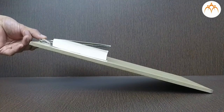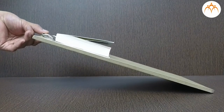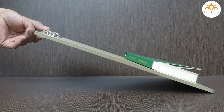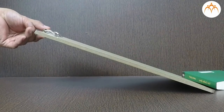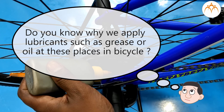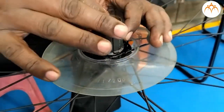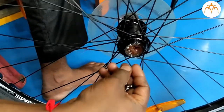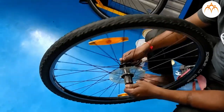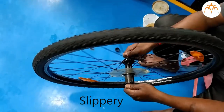Friction is good when you want to stop. Sometimes we need to lessen friction as we want very smooth movement. Do you know why we apply lubricants such as grease or oil at certain places in a bicycle? When we lubricate the joints and chain of the bicycle, it reduces friction, because lubricant is a very slippery substance.